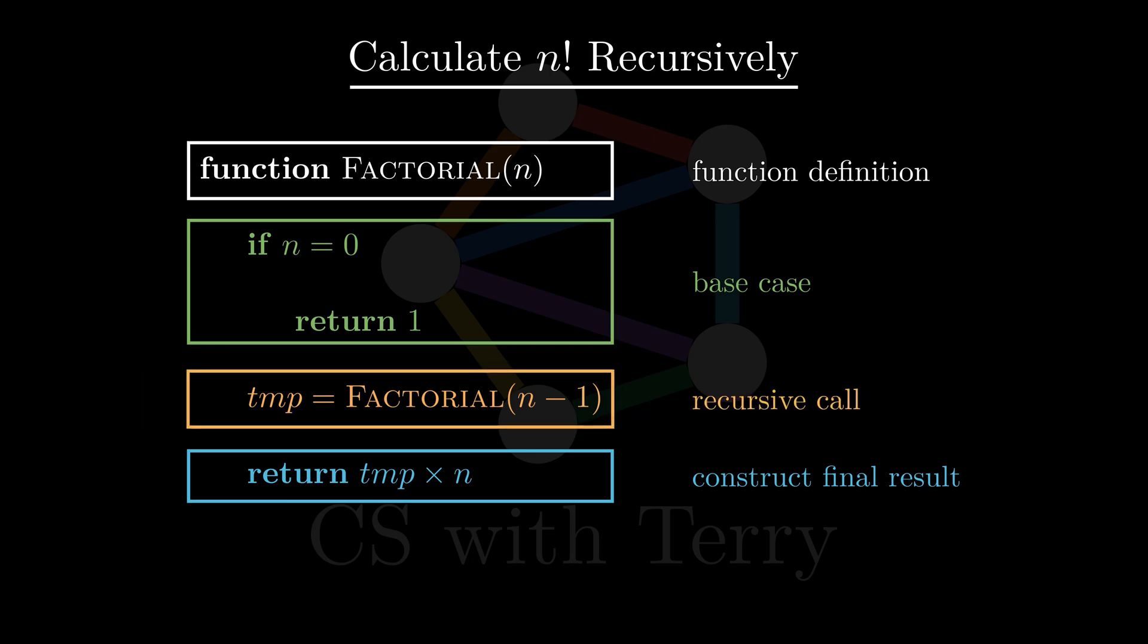In the recursive call stage, we reduce the size of the data by a little each time and call the recursive function. This way, we can find the solution to the smaller subproblem. In the constructing final result stage, we can get the solution to the original problem by using the solution to the subproblem. These are the general steps to solve recursion problems.